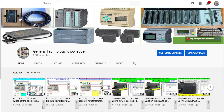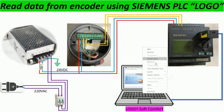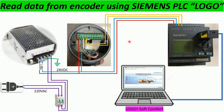Hello everyone, welcome back to my channel. Today I would like to show and share about how to read data from an encoder to show on the display of PLC Siemens Logo, by using the software Logo Soft Comfort. Before creating the program, I would like to explain a little bit about the wiring connection from the encoder to the PLC.